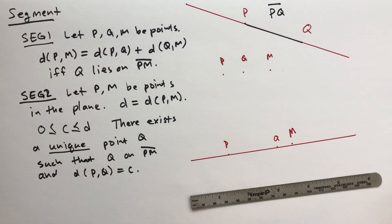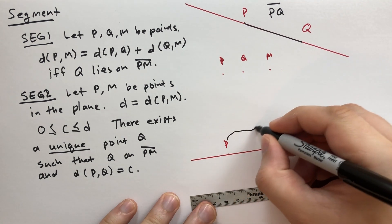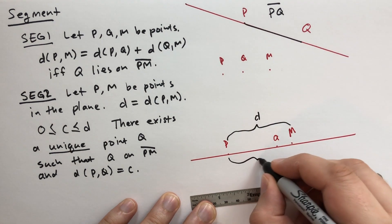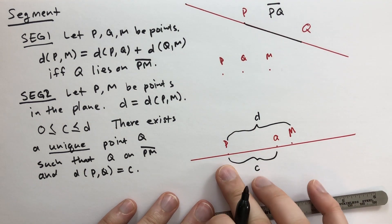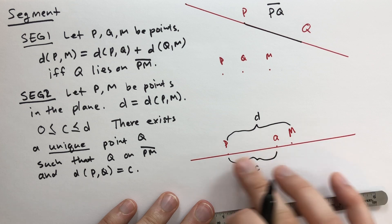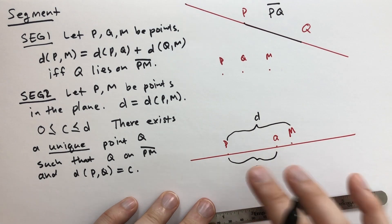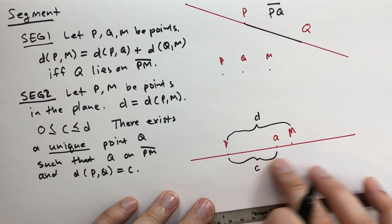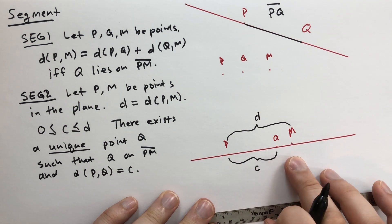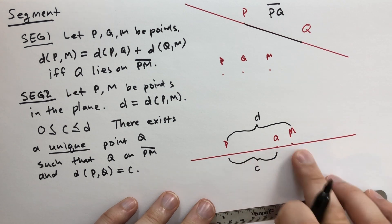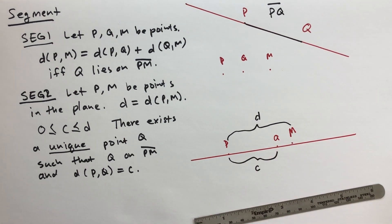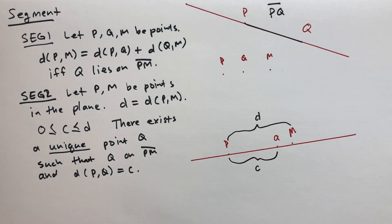Then the distance between P and M, which we call D, and the distance from P to Q, which we call C. C must be zero, it can be D, or it can be between zero and D. And conversely, if you choose any distance between zero and D, including zero and D, obviously, you will find a unique point. So there's as many unique points between P and M as there are numbers between zero and D. That's what this is saying. That's pretty cool.